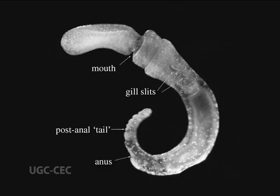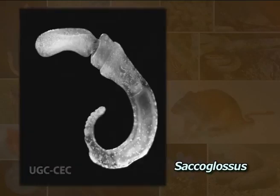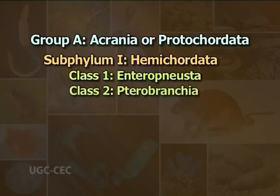The alimentary canal is straight; mouth and anus are present at the opposite ends. Gill slits are numerous, paired and U-shaped. Examples include Balanoglossus and Saccoglossus.